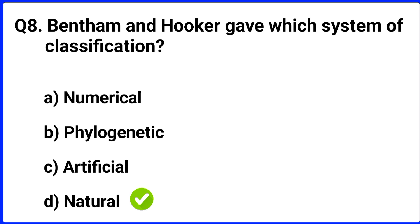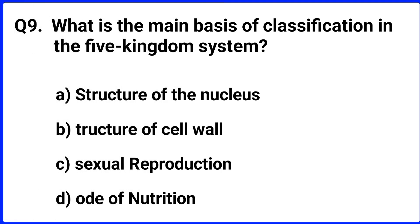Question number nine. What is the main basis of classification in the five kingdom system? The right answer is option D: mode of nutrition.